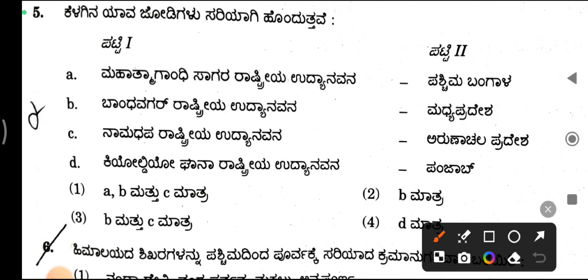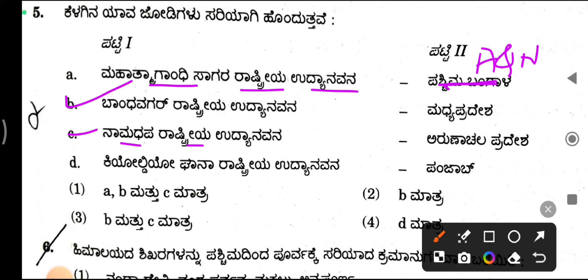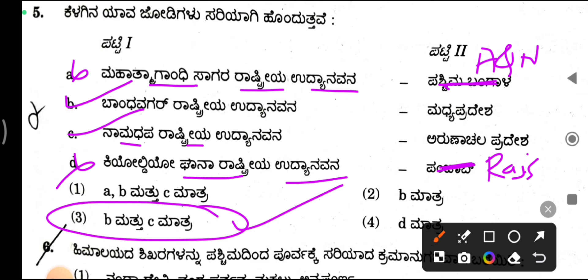Mahatma Gandhi Sagara Rashtra Udyana Vana — Patashchim Bengal and Andaman and Nikobar Island. Next, Bhandavagad — this is Madhya Pradesh, correct. Nandhafa Rashtra Udyana Vana — this is Arunachal Pradesh, correct. Next, Kheleariya Rashtra Udyana Vana — this is Rajasthan, so it is tappu (wrong). Option 2 and 3, B and C are correct.